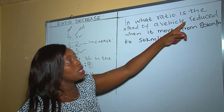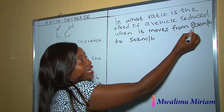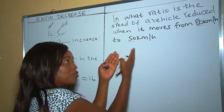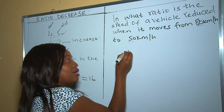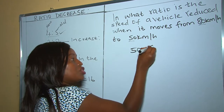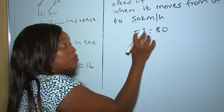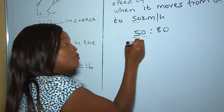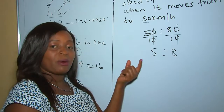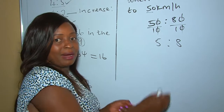In our fourth example: in what ratio is the speed of a vehicle reduced when it moves from 80 kilometers per hour to 50 kilometers per hour? Since 80 is higher than 50, the car speed has reduced from 80 to 50. Our current is 50, so we begin with 50, then go to the original 80. Both numbers end in zeros, so we divide by 10 on both sides and get 5 is to 8 — our ratio decrease. This begins with the smaller number going to the bigger number.